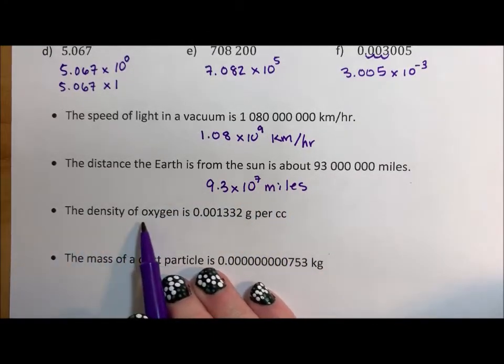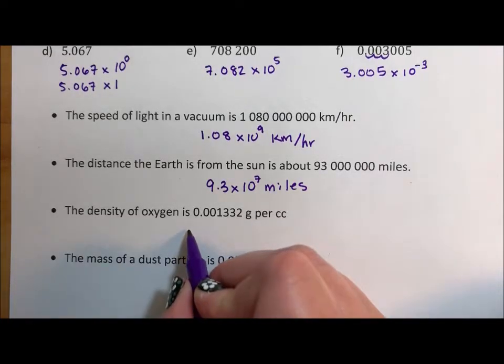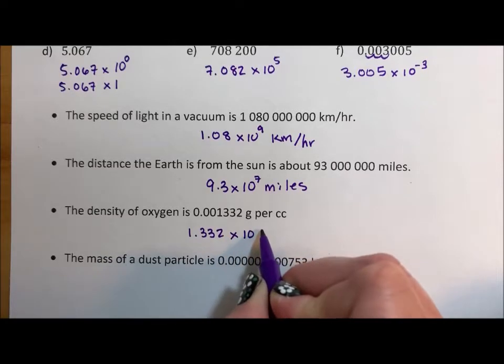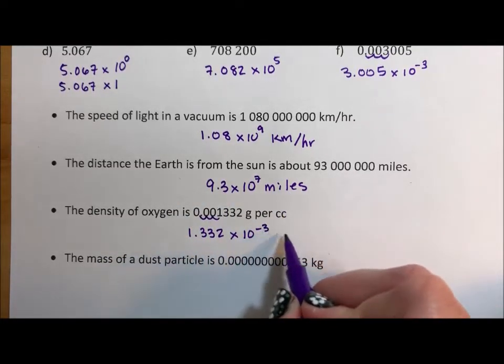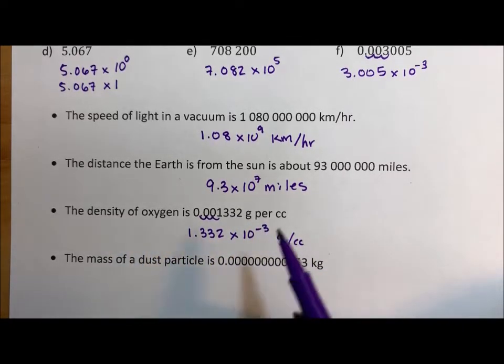The density of oxygen is 0.001332 grams per cc. So that's 1.332 times 10 to the negative, let's see, one, two, three grams per cc. Otherwise the density would be much smaller if we don't take it out of something.